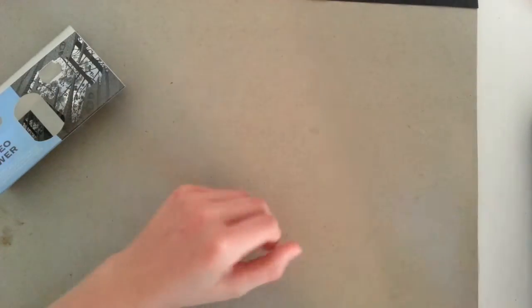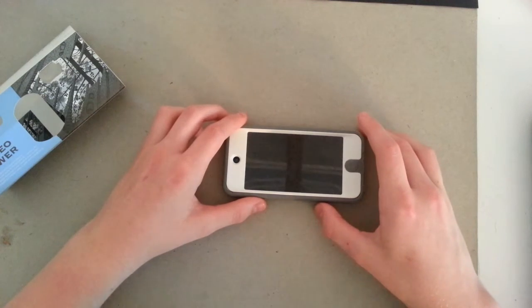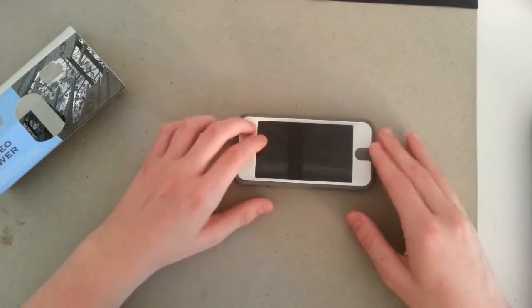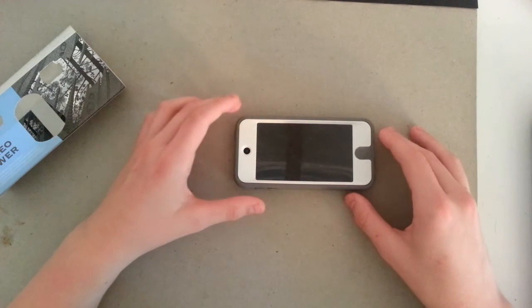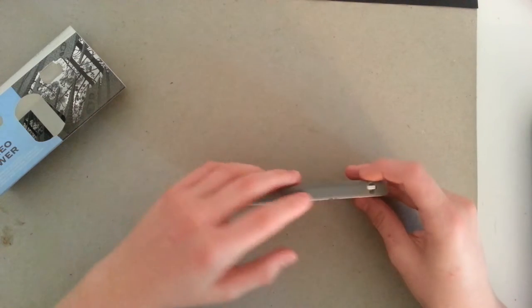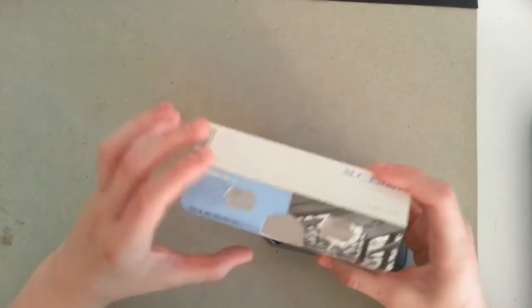And the second thing that you'll need is an iDevice in a case. And in this case, no pun intended, I have the iPod Touch 5th Generation in an OtterBox Defender Series case. And I prefer using a case with a rubber outing because it gives it some traction inside of the stereo viewer so it'll stay upright.